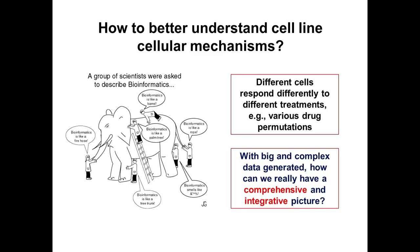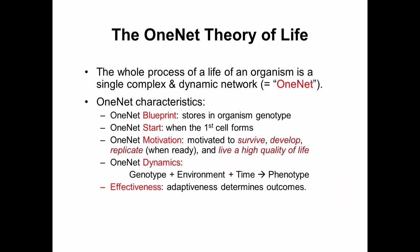We have thousands of cell lines working in different ways. How can we have a comprehensive, integrative picture about cells — and go further to tissues, organs, and organisms? The theory I've been thinking about is called the 'one-net theory of life.' This theory states that the whole process of life of an organism is a single complex and dynamic network — a 'one-net.' The one-net blueprint is stored in the organism's genotype, which tells you how the organism can develop.